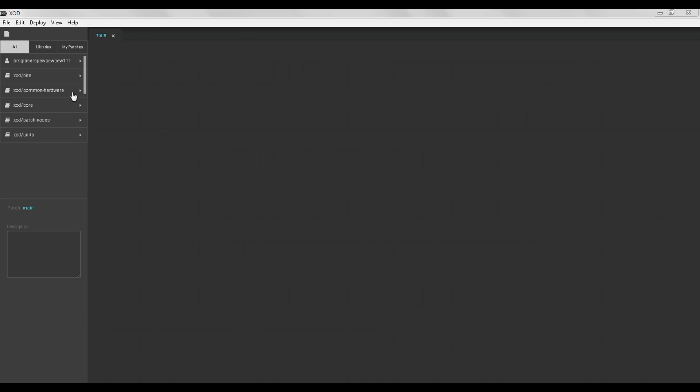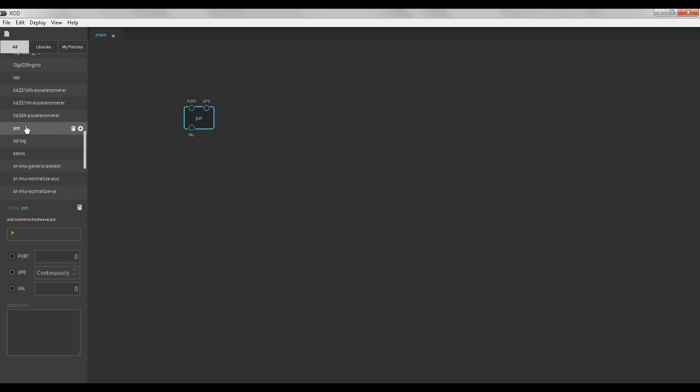So the first thing we're going to do is go to the common hardware list on the left. You can see a lot of devices are supported, but we're just going to look for pot, short for potentiometer. And we're going to drag 2 of them onto the workspace.